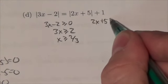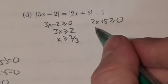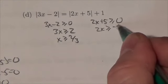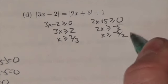And then the next one here is 2x plus 5. I'm going to check and see where that's greater than 0. So 2x is greater than or equal to negative 5, x is greater than or equal to negative 5 halves.